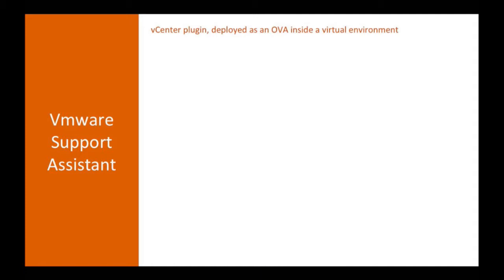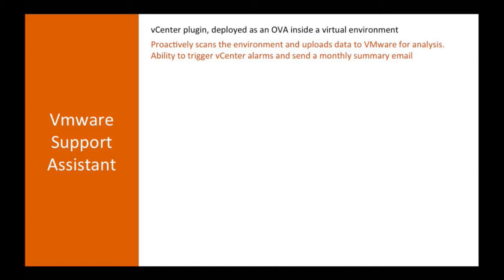The third one is the VMware Support Assistant, and if you've got vCenter server you should probably grab this one as well. It's a VMware tool — you download an OVA so it's deployed as an appliance in your environment. There are two sides to Support Assistant: ProActive and ReActive. The ProActive side scans your hosts, logs, and vCenter servers and uploads that data to VMware optionally, with the ability to obfuscate IP addresses and MAC addresses. VMware crunches the data on the back end and can alert you to issues via a monthly report email or by triggering vCenter alarms.